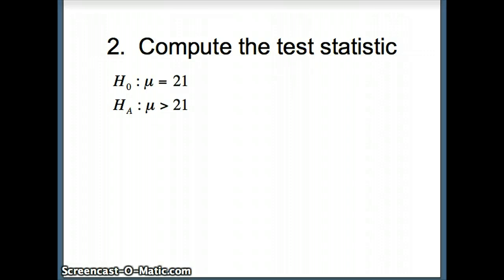Next, compute the test statistic. Here are the statistics we were given and the formula we need: X bar minus mu divided by s over root n. X bar 21.7 minus mu 21, divided by s 5.1 over the square root of 40.